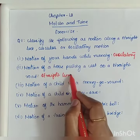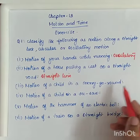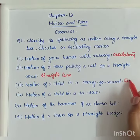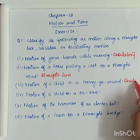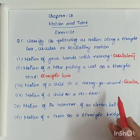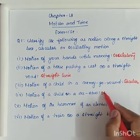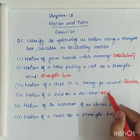Motion of a child in a merry-go-round, so it's circular. Motion of a child on a seesaw — it's also periodic, so it's oscillatory.